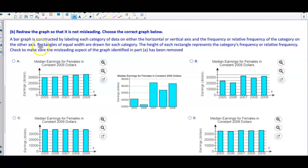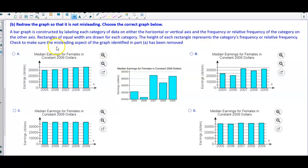Remember that a bar graph is constructed by labeling each category of data on either the horizontal or vertical axis and the frequency or relative frequency of the category on the other axis. Rectangles of equal width are drawn for each category, and the height of each rectangle represents the category's frequency or relative frequency.